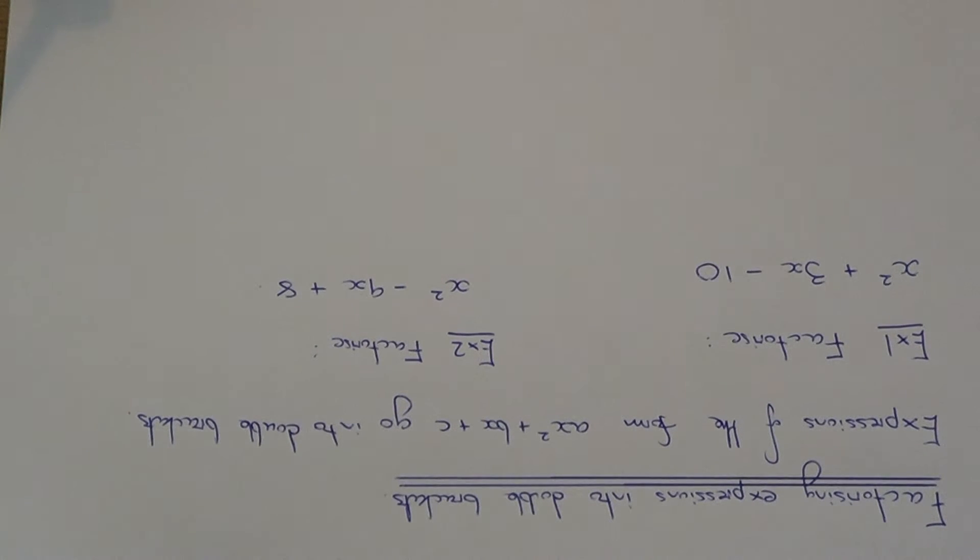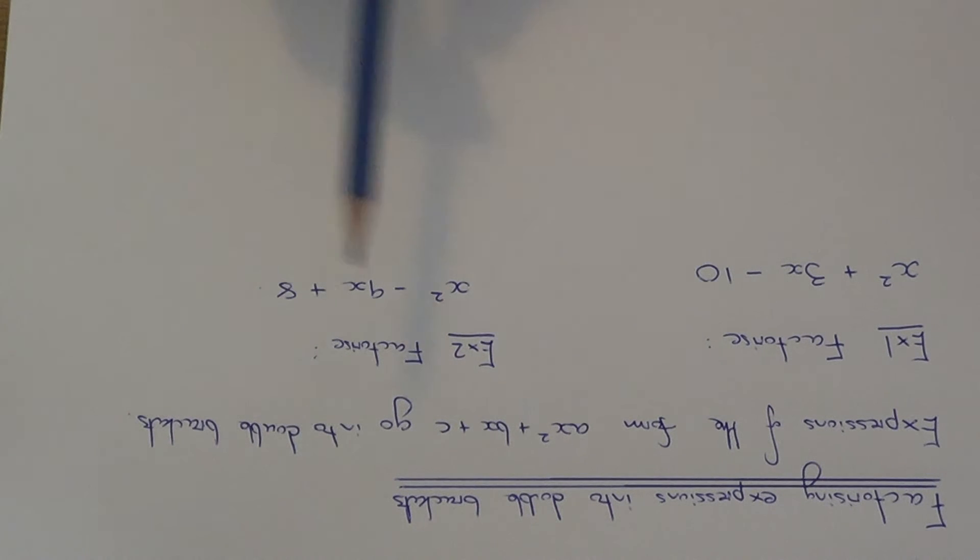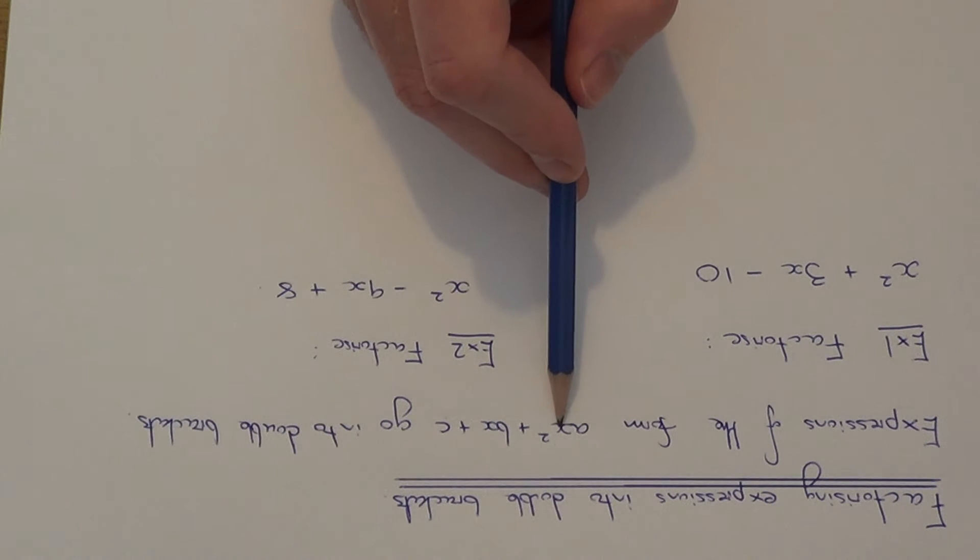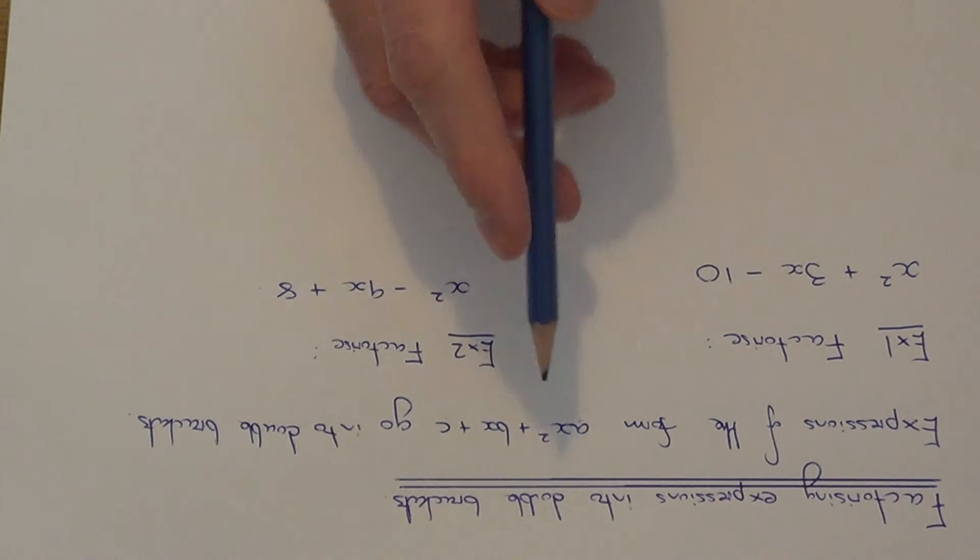Today I'm going to show you a couple of examples on how to factorize an expression in the form AX squared plus BX plus C. So these type of expressions in this form here go into double brackets. And the ones that we're looking at today will be when the number before X squared is equal to 1, so A is equal to 1.